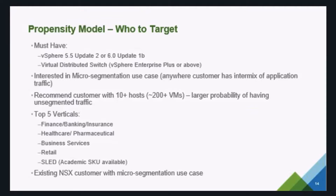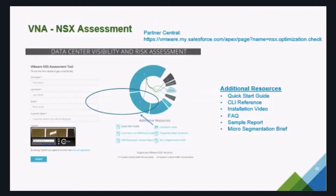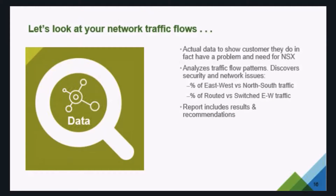Target customers are those interested in security — protecting their east-west traffic, applications, data center, and network. As for recommended customer size, we're looking for 10 or more hosts and 200 or more VMs, which likely have more unsegmented traffic. More information is available on Partner Central at VMware.com/partners — you'll find a quick start guide, sample reports, and FAQ documents. We deploy the appliance onto the customer's network, connect to their vCenter, analyze east-west and routed versus switching traffic, and generate a report to discuss with the customer.